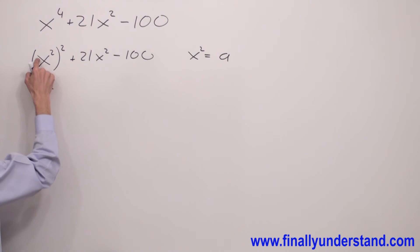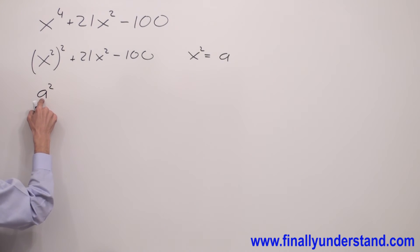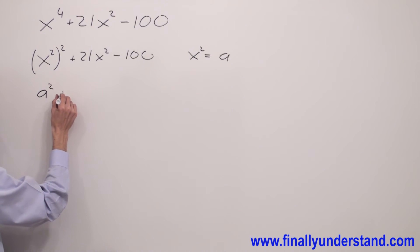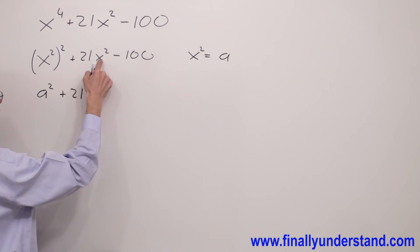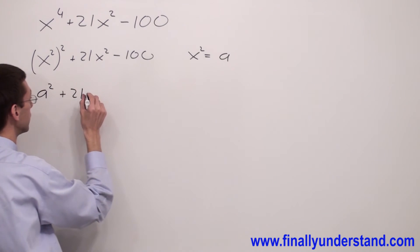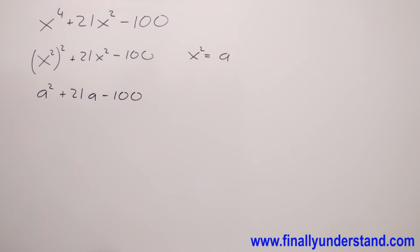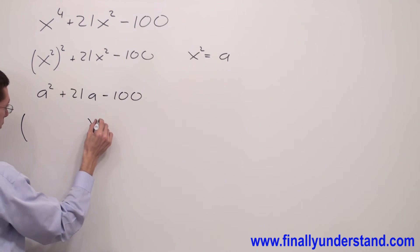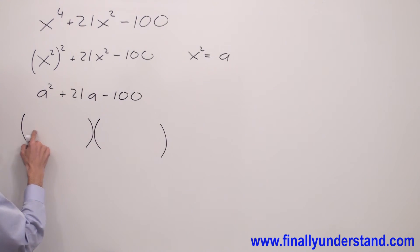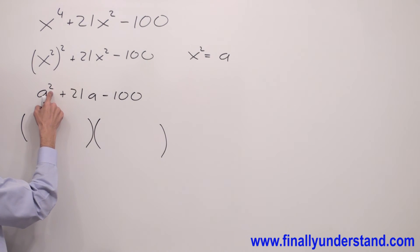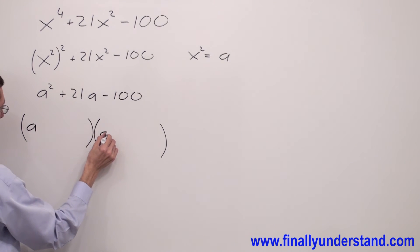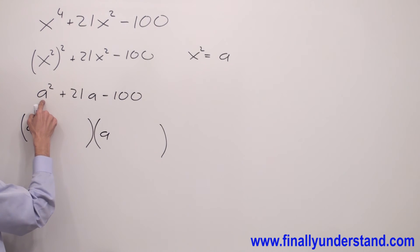So I have a squared. Instead of x squared I'm going to write a, giving me a squared plus 21a minus 100. Next, I'm supposed to perform regular factoring. The first terms of my factors multiplied together must give me a squared, so I'll have a times a, which gives me a squared.